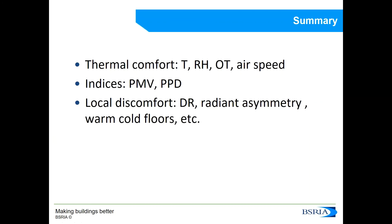To finalize this presentation, we have seen how in order to measure thermal comfort we have to take into consideration the temperature of the air, the speed of the air, the relative humidity, and the operative temperature or the globe temperature. We have seen how to calculate the thermal comfort indices of PMV and PPD, and we also have to take into consideration the clothing levels and the metabolic rate, which is an indication of the activity that a person is doing. Finally, we have seen how draft risk, radiant asymmetry, and warm or cold floors can also give us local discomfort.